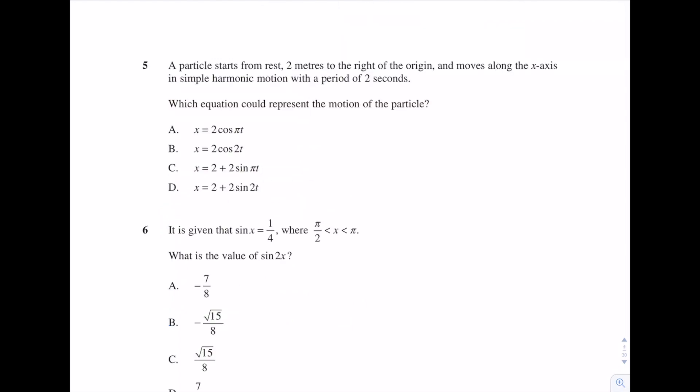Question 5. A particle starts from rest, 2 meters to the right of the origin, and moves along the x-axis in simple harmonic motion, with a period of 2 seconds. Which equation could represent the motion of the particle? Okay, this is a good question. Things to note, the particle starts from rest, so let's highlight that, and it's 2 meters to the right of the origin. Okay, and it has a period of 2 seconds. So period of 2 seconds means T is equal to 2.